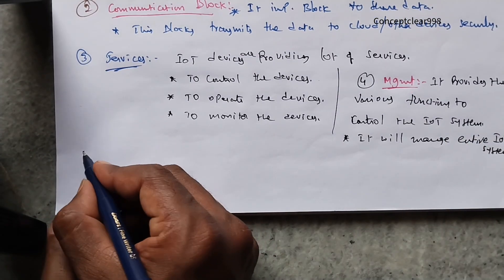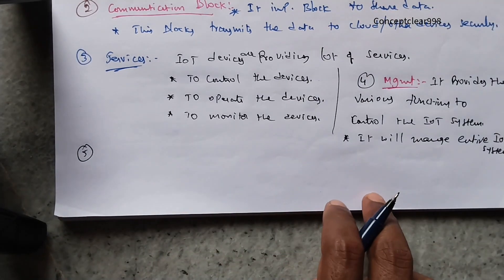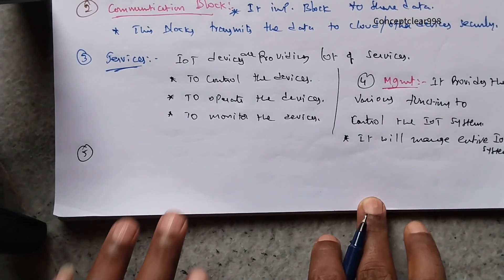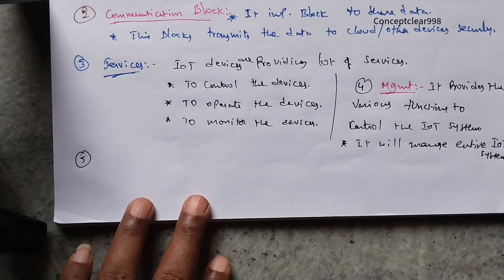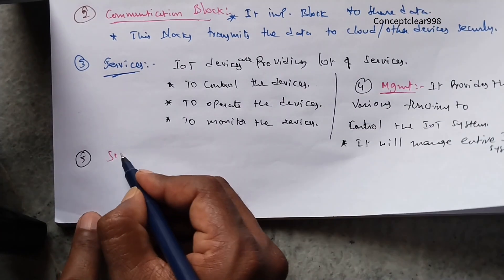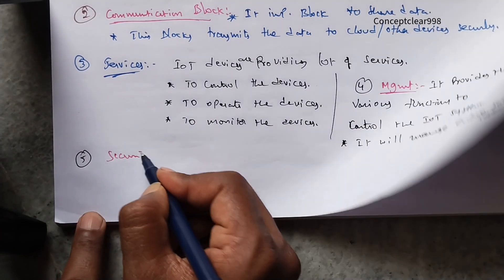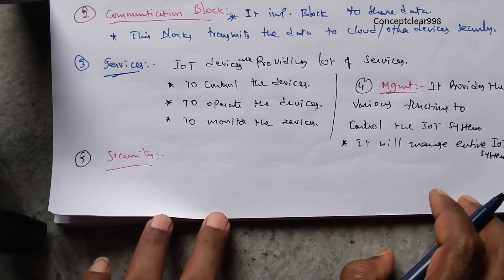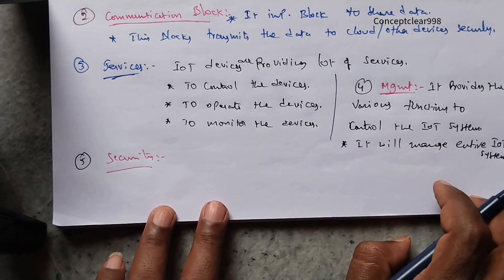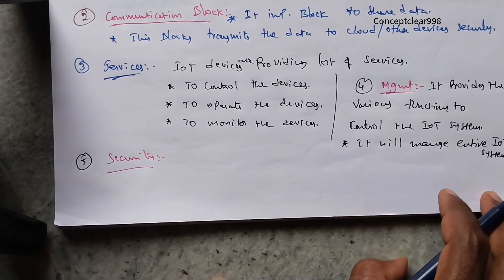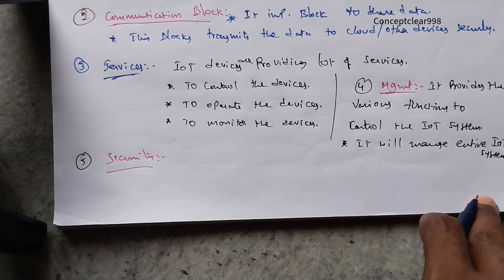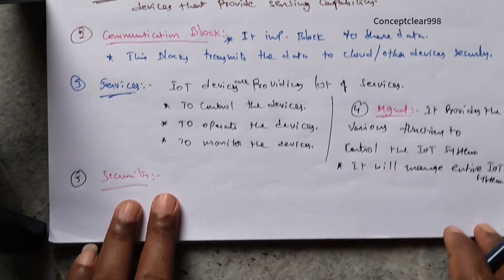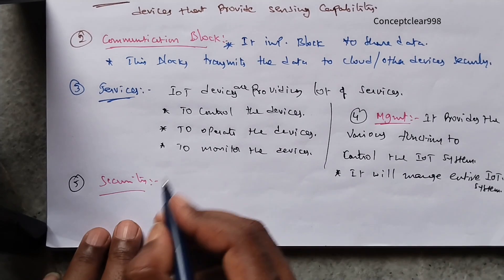The fifth block is Security. Security provides user-level security. It provides functions to handle secure data by taking authentication.